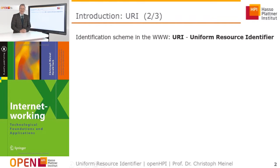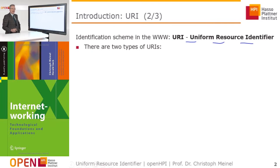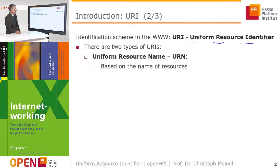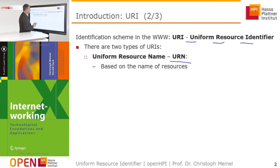In the World Wide Web, the identification scheme of URIs — the Uniform Resource Identifiers — are used. And exactly like in social life, there are two types of such uniform resource identifiers. There is a possibility to identify resources, the web resources, by their name. This scheme is called the Uniform Resource Name, the URN.